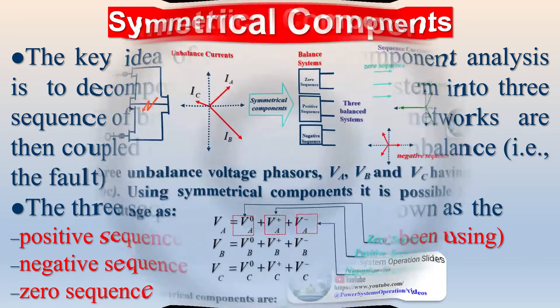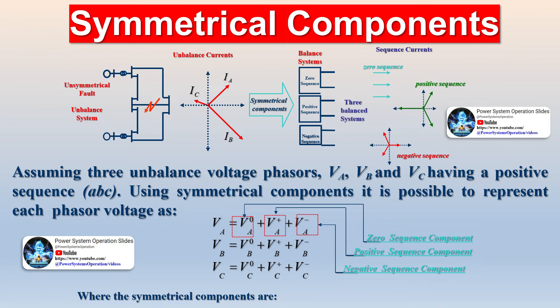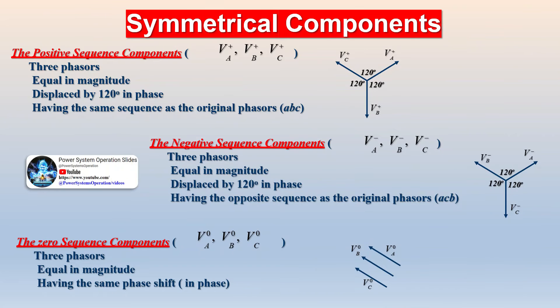Equipment protection: Symmetrical components aid in designing protective relays for equipment. By analyzing the magnitude and phase relationships of the positive, negative, and zero-sequence components, engineers can set appropriate relay settings to detect faults and adjust the burden in instrument transformers to protect equipment from damage.